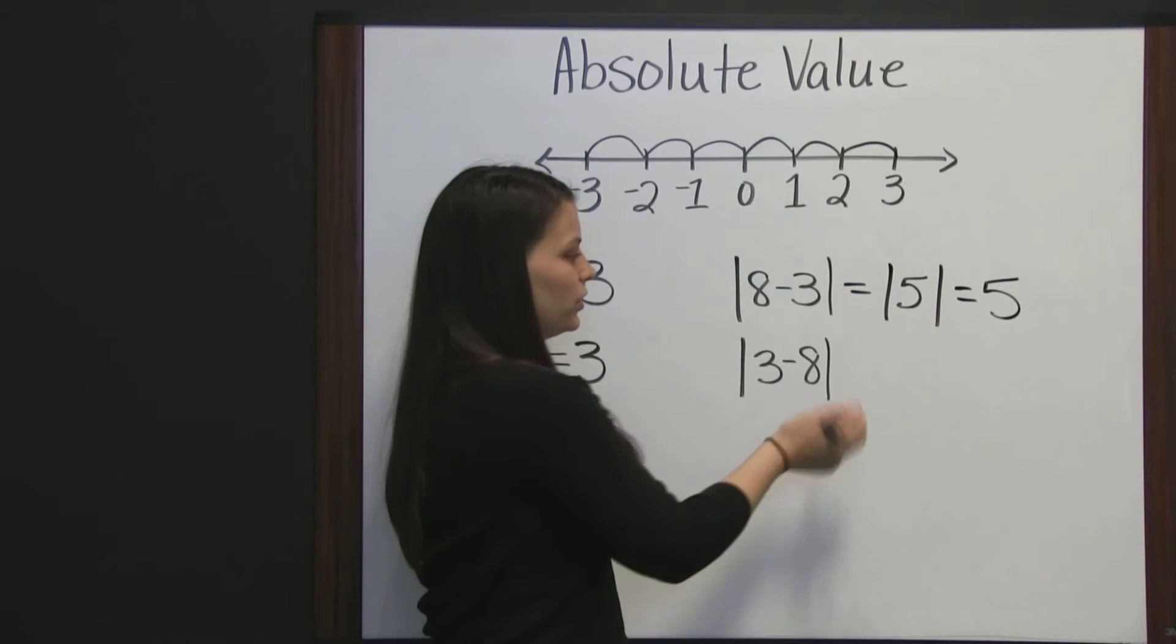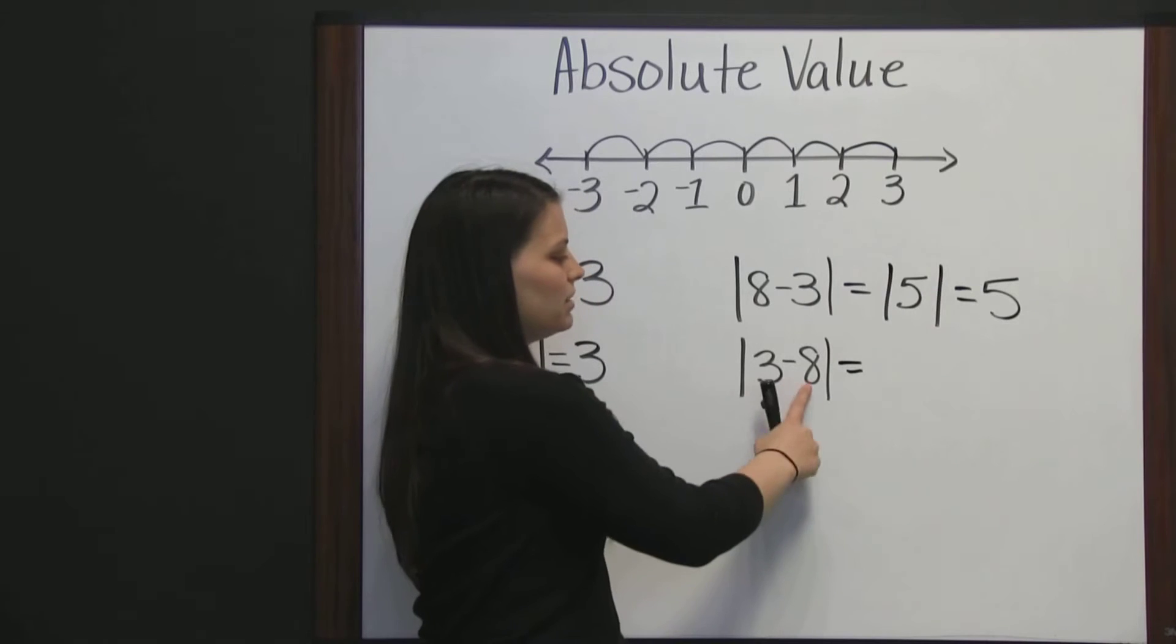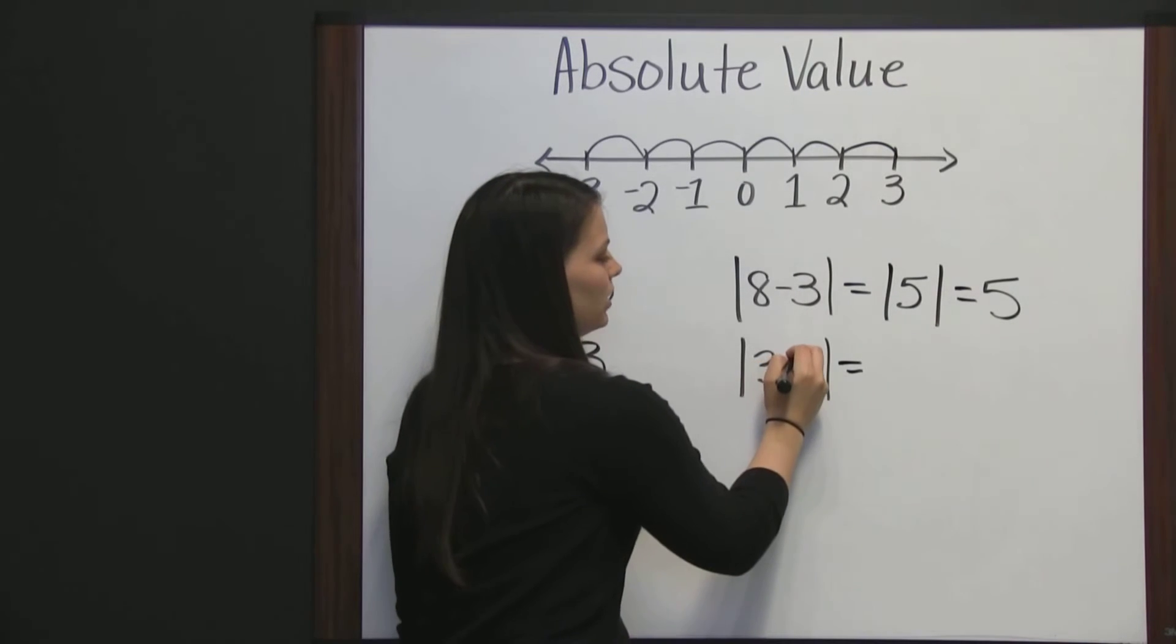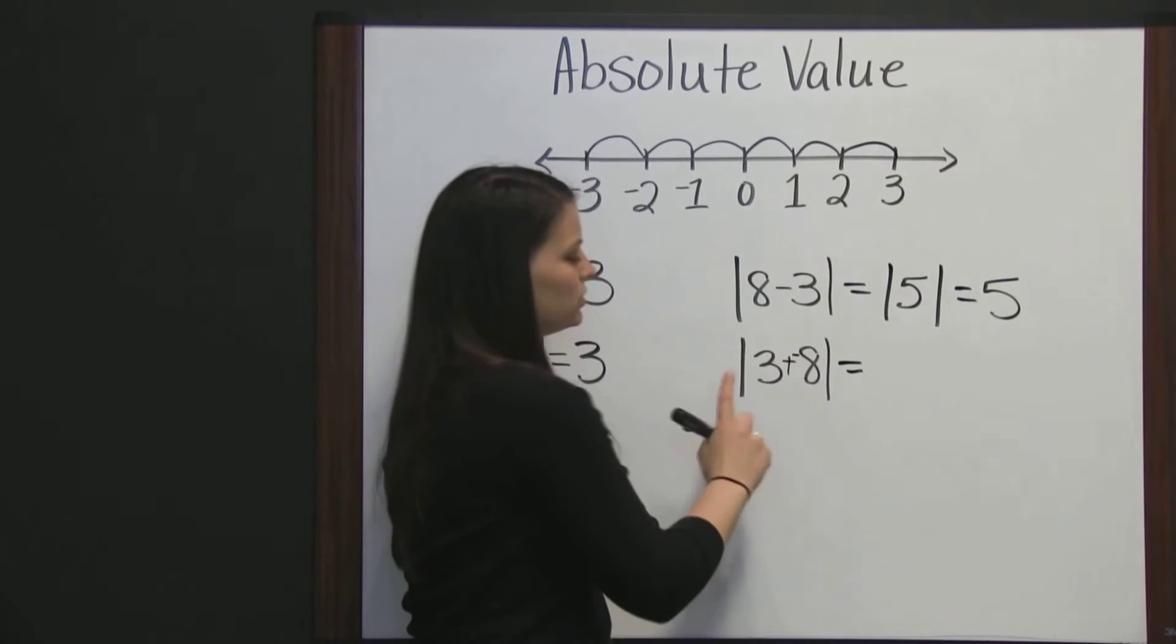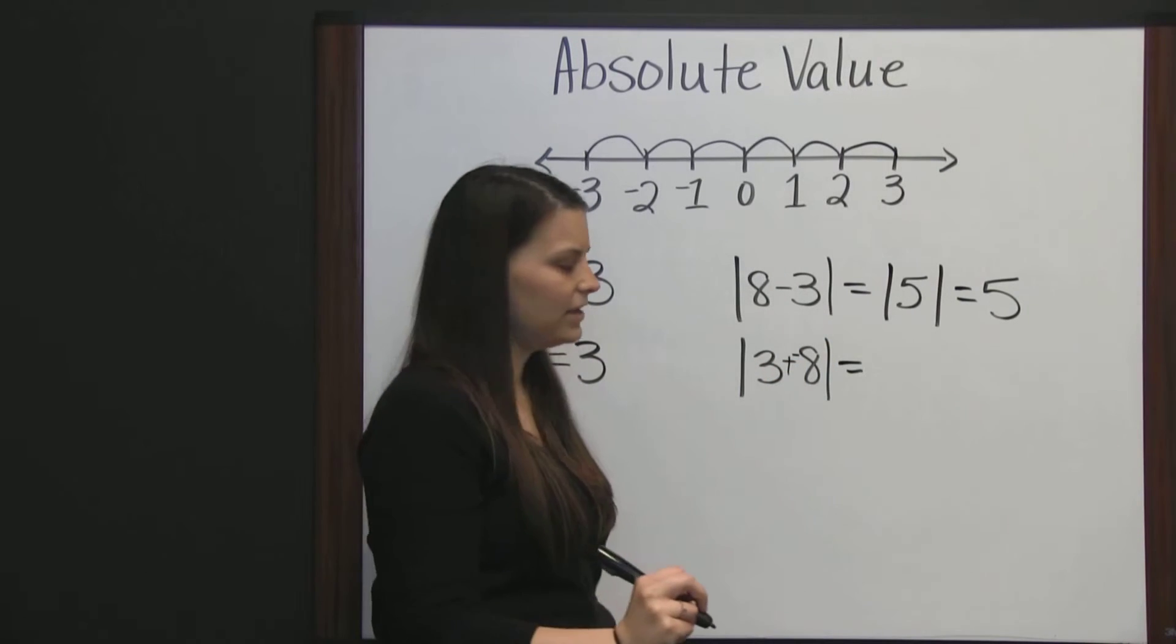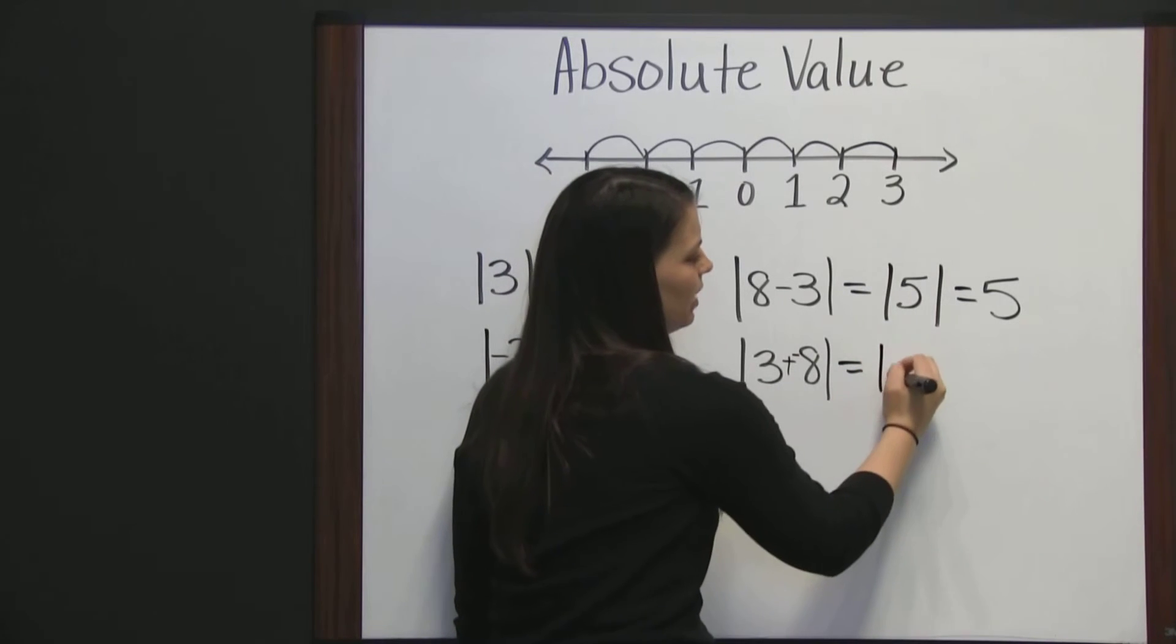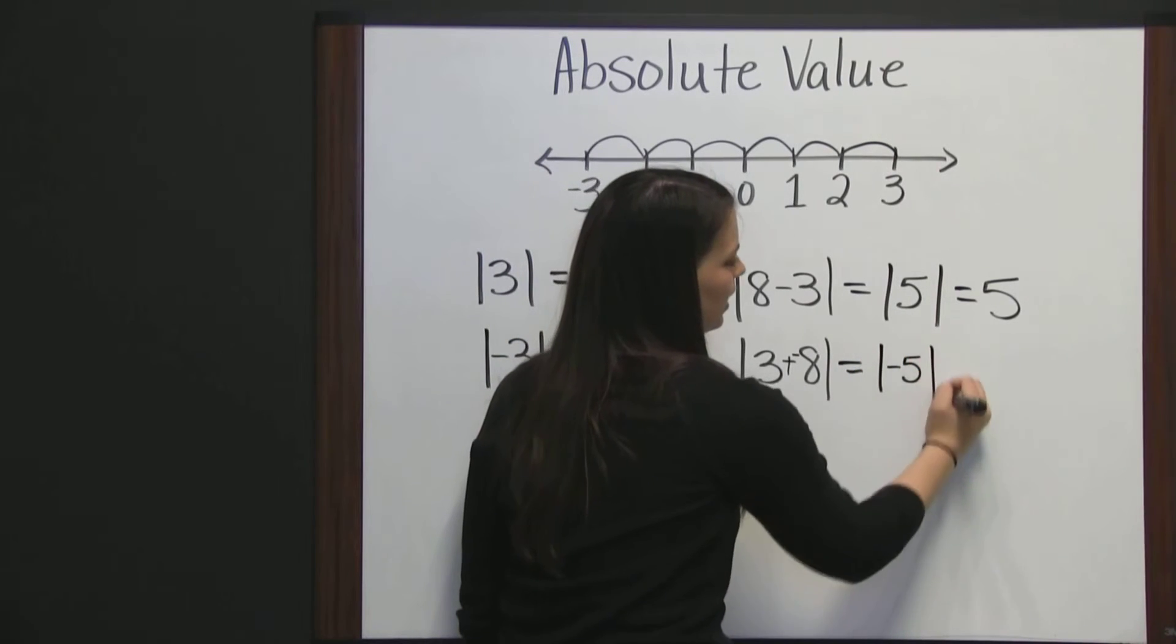Now, we'll look at the difference switched around: three minus eight. Three minus eight, you could do add the inverse, three plus negative eight. Three plus negative eight is negative five. So, we have the absolute value of negative five.